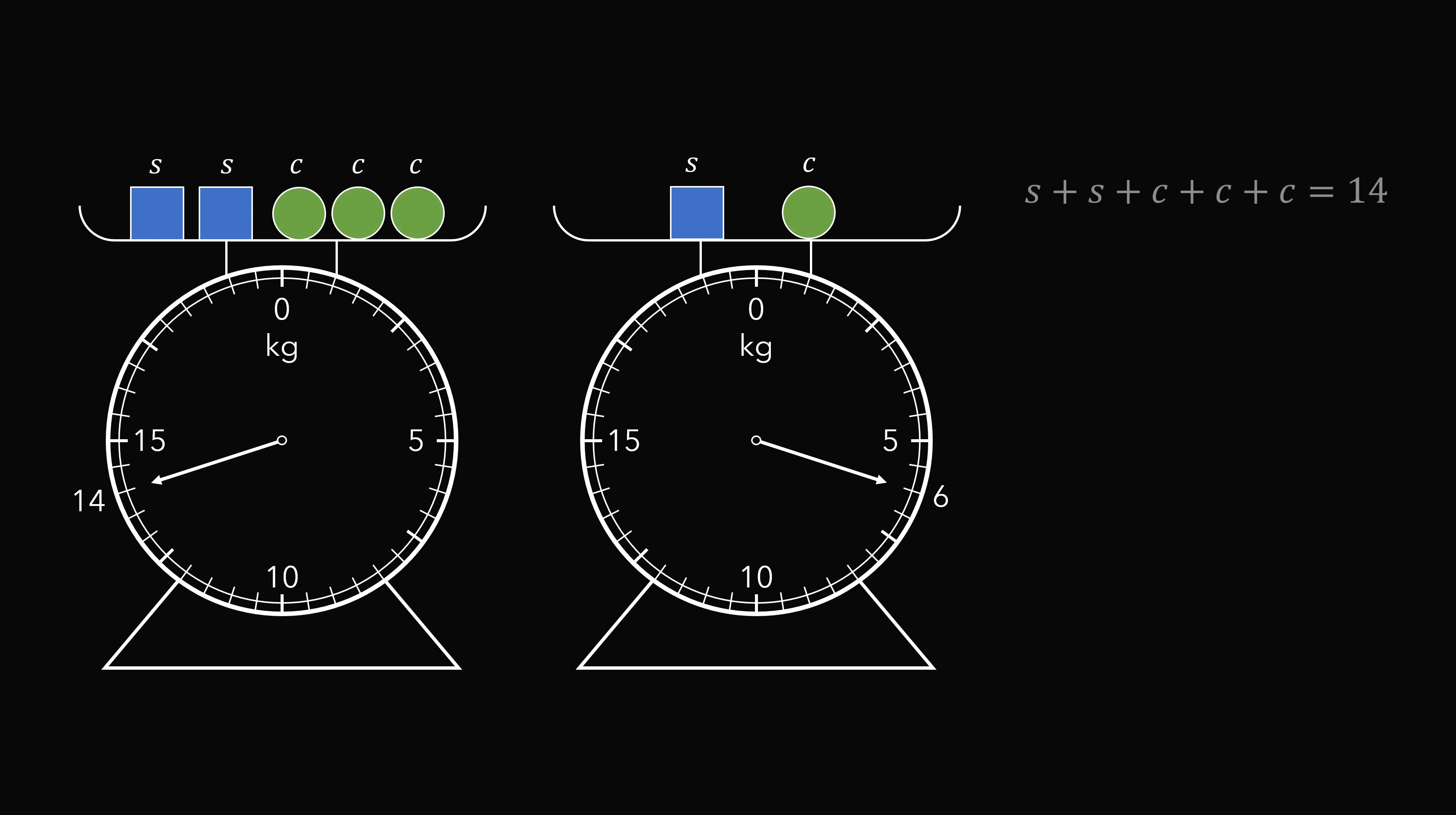On the left scale, we have s plus s plus c plus c plus c equals 14. This is equivalently written as 2s plus 3c equals 14. On the right scale, we have s plus c equals 6.